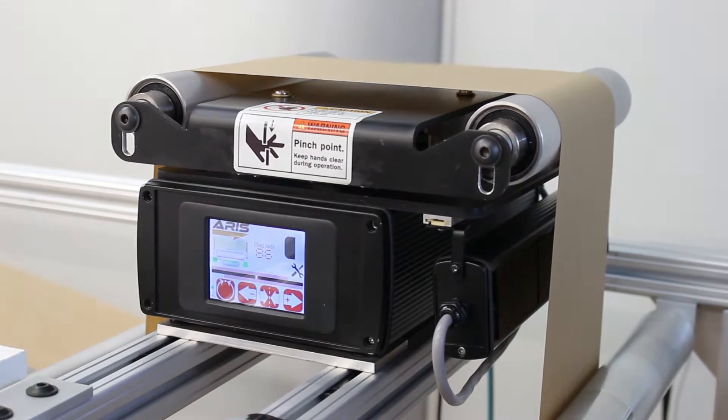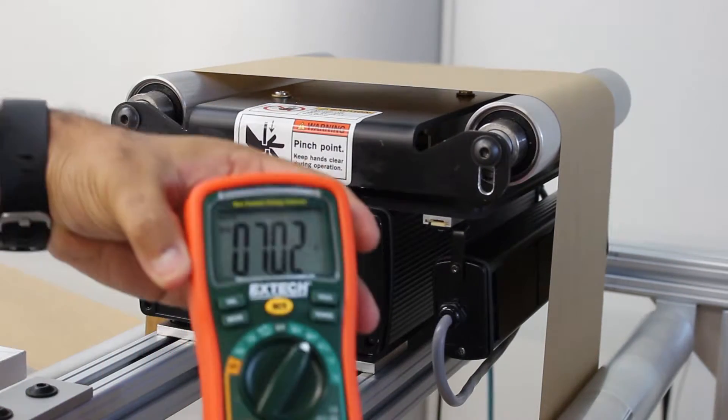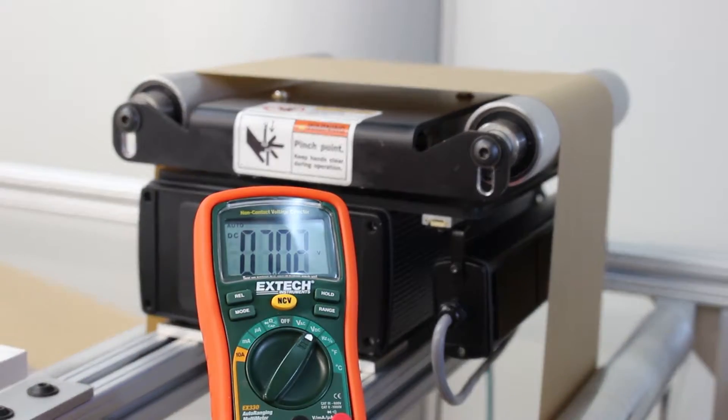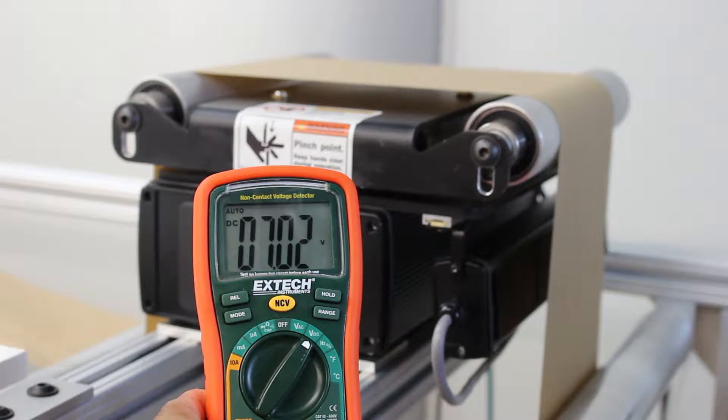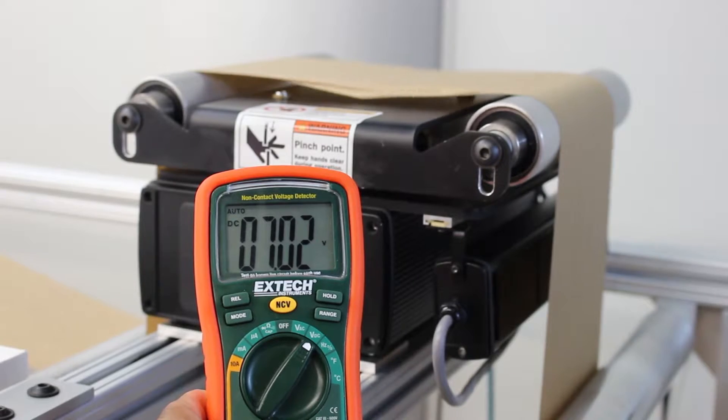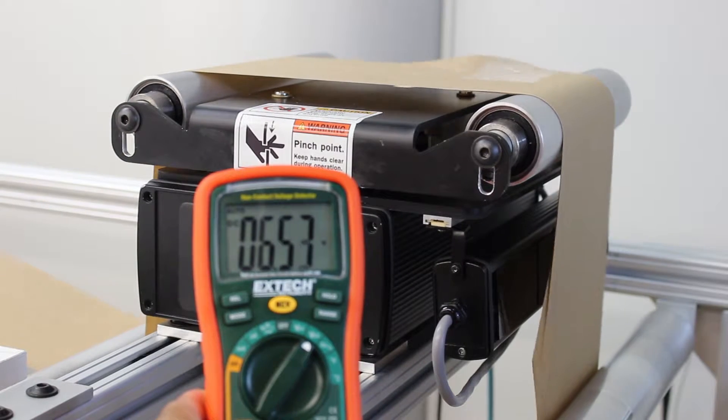With two output options, the user has the flexibility to monitor the width based on their need. The real-time measurement can be output as an analog voltage between 0 to 10 volts. As the width changes, the analog output increases or decreases proportionally.